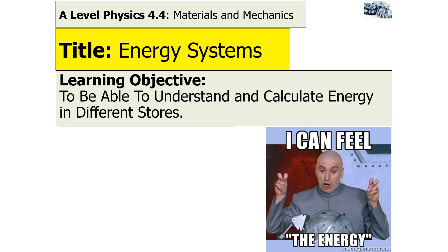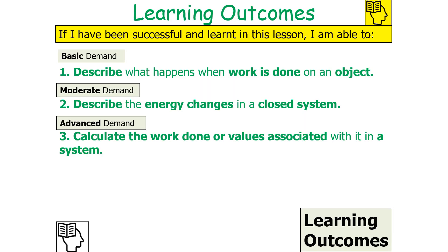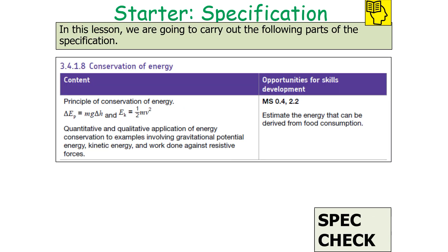If we have been successful in today's lesson, we should be able to describe what happens when work is done on an object, describe the energy changes in a closed system, and calculate the work done or values associated with it in a system. This links into AQA A-level physics specification 3.4.1.8, conservation of energy.